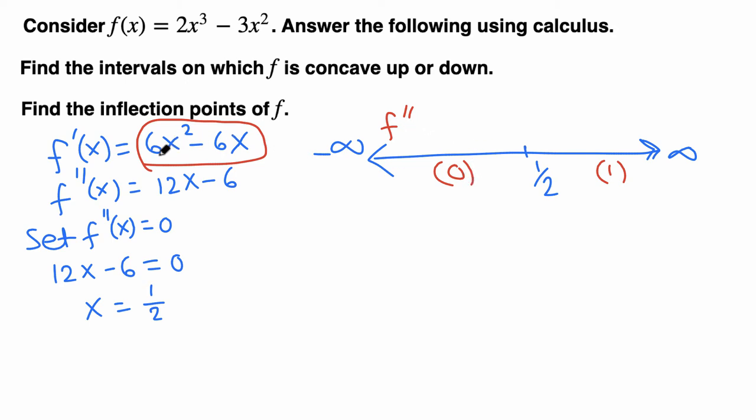We plug in 0 here into the second derivative f''(x) = 12x - 6. Plugging in 0 gives 0 - 6, which is negative, so second derivative is negative. Plugging in 1 gives 12(1) - 6 = 6, which is positive.